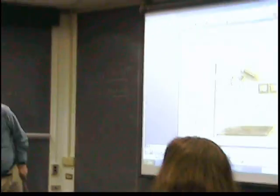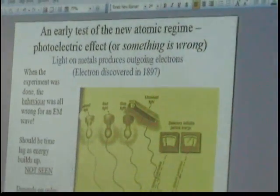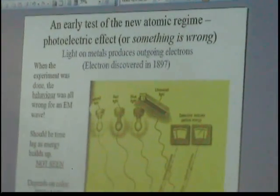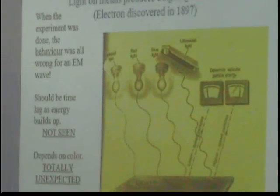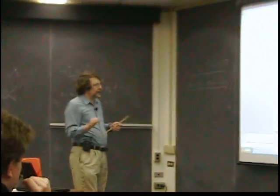So, the early tests of the new atomic regime, so they knew about that. So, they had light being this, and everything was going great with light being a wave, except for something that suddenly didn't work. And this was the photoelectric effect.